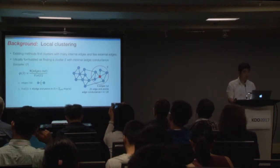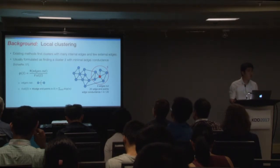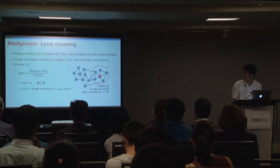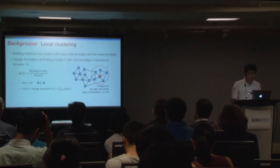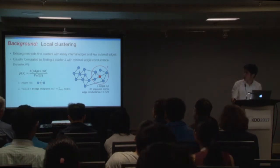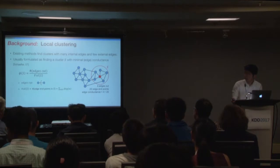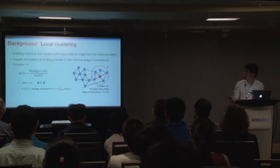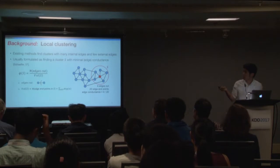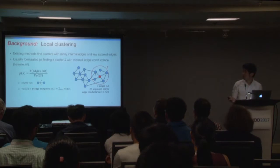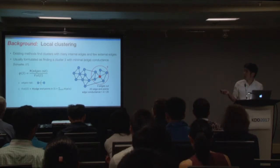Existing methods tend to find clusters with many internal edges and few external edges, and this is usually formulated as finding a cluster S with minimum edge conductance. The edge conductance is defined as a ratio of the number of edge cuts to the volume of set S, where the volume is the sum of degrees of all nodes in S. The lower the conductance value, the better the set S as a community, and therefore we want to find a cluster with minimal edge conductance.